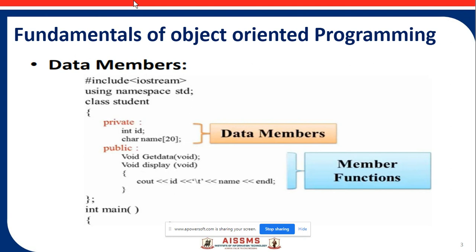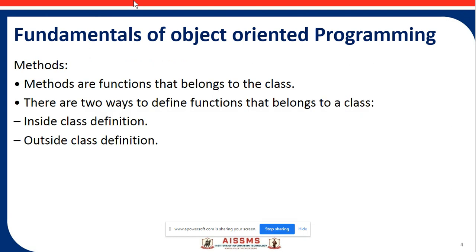Here is a code example using namespace standard. First, a class is created, then the data members are in a private field — a private access specifier is used for integer and character types. Then the member functions are included. These are the data members.